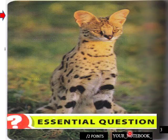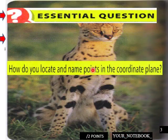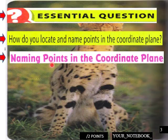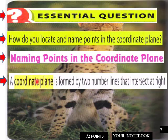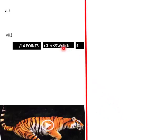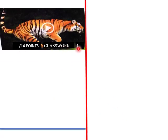Page three — notebook. Students, this goes in your notebook. How do you locate and name points in the coordinate plane? Naming points in the coordinate plane: the coordinate plane is formed by two number lines that intersect at right angles. The point of intersection is zero, or the origin on the number line. Classwork page four.